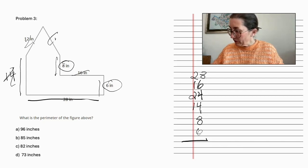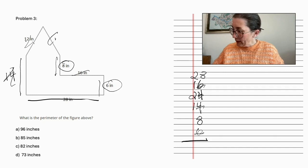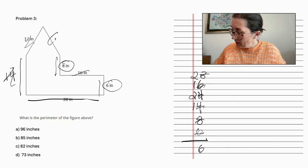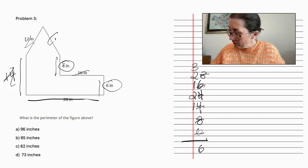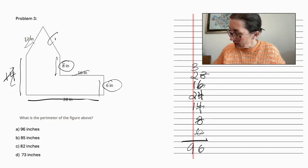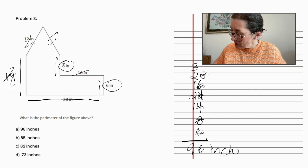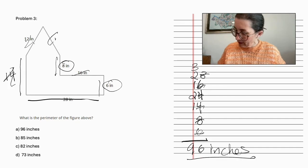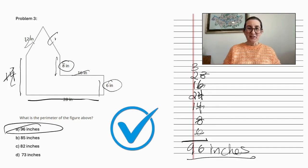So let's add these up. We've got 10, 20 plus 16, that is 36, 5, 6, 7, 8, 9, 96 inches. And there's our answer.